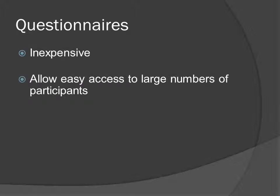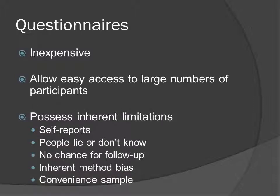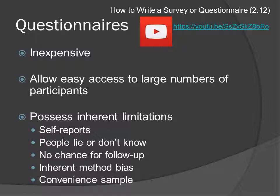Questionnaires are inexpensive and allow easy access to a lot of people, but they have limitations. Often it's a convenient sample — you give the survey to people in the room who may not be representative of the population. They are self-reports, and people may lie or not know. Self-reports have inherent problems. You can't follow up — they answer the survey and leave. There is method bias simply by using a survey; people are conditioned how to respond and often have a negative attitude because of the method used. You can look at a YouTube video on how to write a survey or questionnaire.